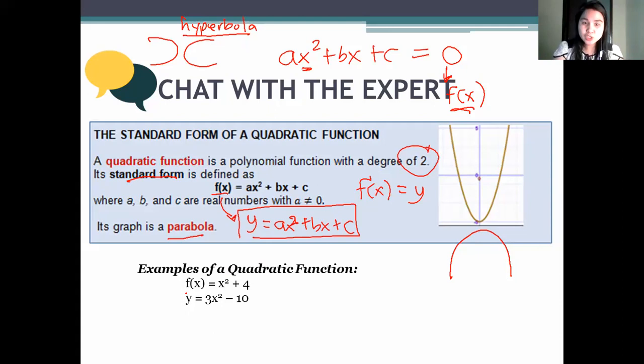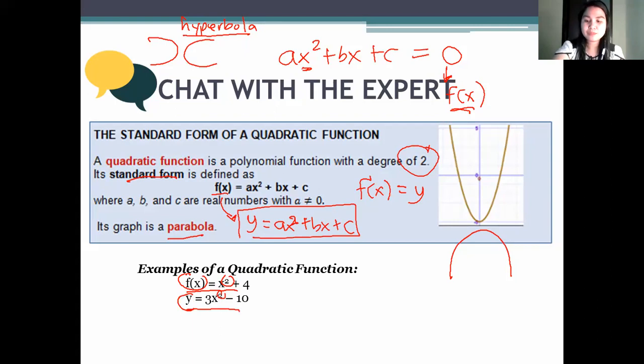Here are some examples of quadratic functions. The first one: f of x equals x squared plus 4. The second: y equals 3x squared minus 10. You look at the exponents — still squared. You look at one side: f of x or y. So they are called quadratic functions.